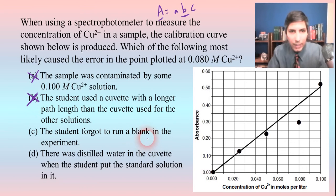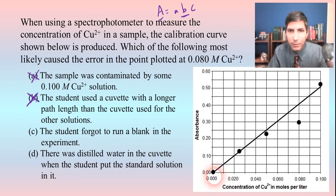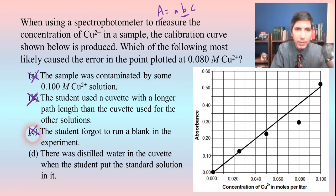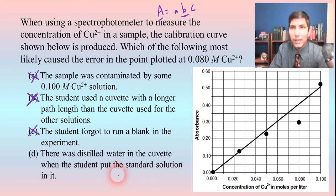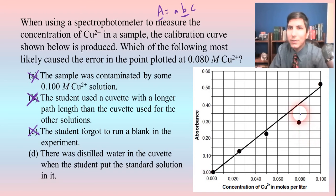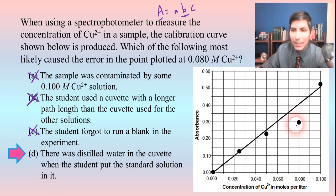Choice C says the student forgot to run a blank. But we can see right here that there's a blank — zero concentration and zero absorbance — so that's not right either. It has to be D. There was distilled water in the cuvette when the student put the standard solution in it. Distilled water has a concentration of zero molar copper, so if you put a little bit of zero into something that you think is 0.08, the value is going to be lower than you think it is. That's why the answer is D.